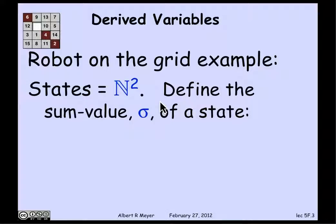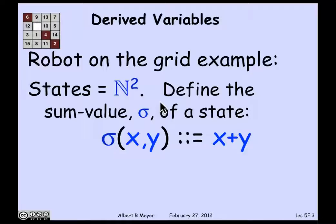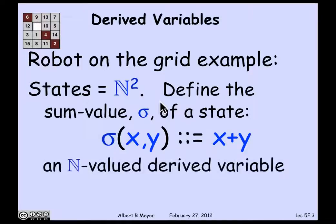Let's look at the example of the robot on the grid. The states were pairs of non-negative integers, giving the coordinates of where the robot was. One of the derived variables that we found really useful was the sum value sigma of a state, which is defined to be x plus y. This would be a non-negative integer valued derived variable.